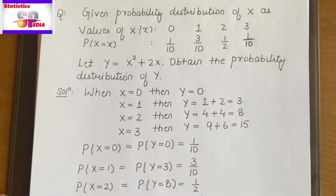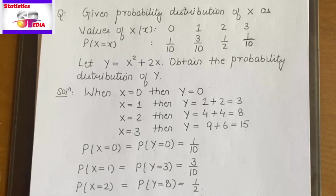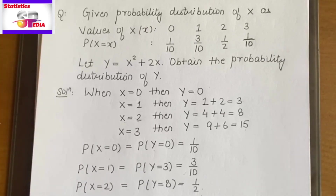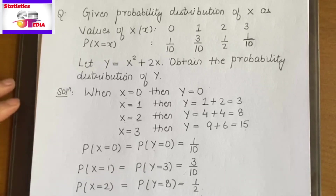So students, today we understood the discrete probability distribution, their conditions, which we call the PMF — probability mass function — and we implemented that concept on two questions. In the next upcoming lecture, we will go to an advanced level, increase the difficulty slightly, and solve more questions on probability distribution.